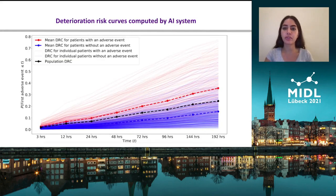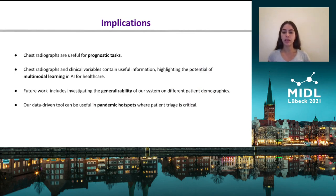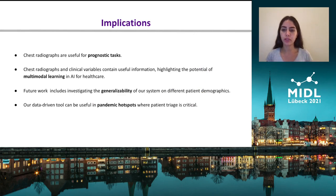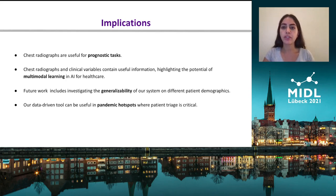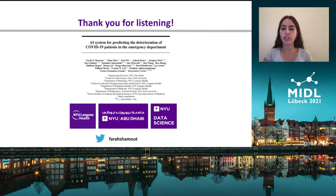Finally, these are the deterioration risk curves that were computed by our AI system, and the model was reasonably calibrated. To conclude, chest radiographs are useful for prognostic tasks. They also contain useful information highlighting the potential of multimodal learning. For future work, we're interested in assessing the generalizability of our network. Thank you for listening, and I'm happy to answer any questions in the discussion session.